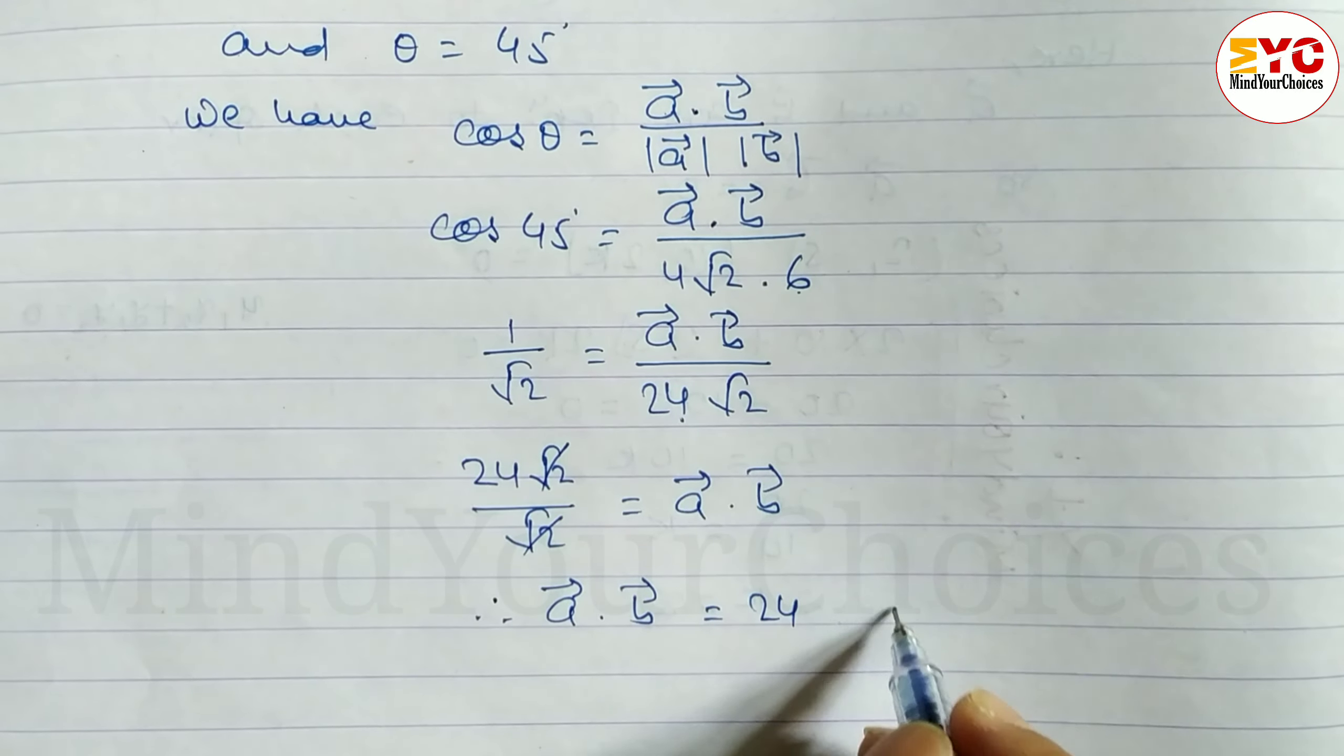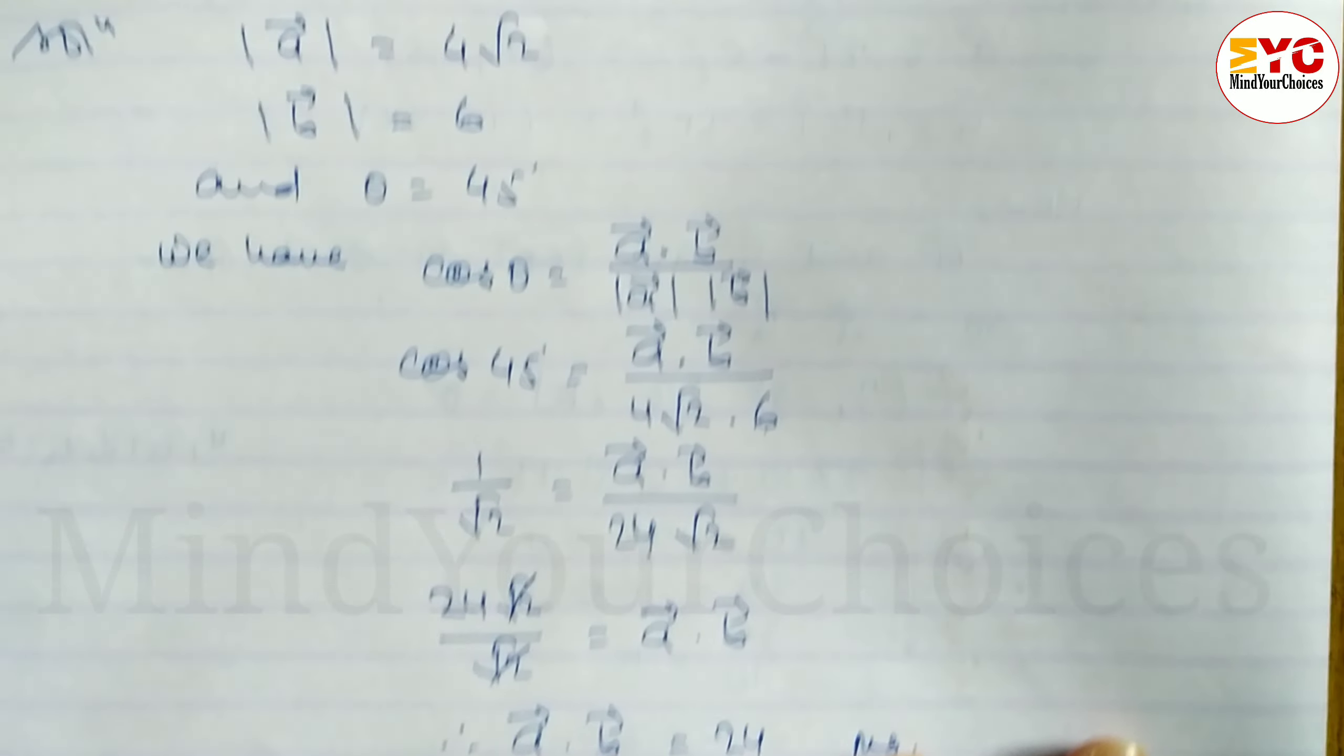24 is the answer. We had to find the scalar product of a and b, and we got the value 24.